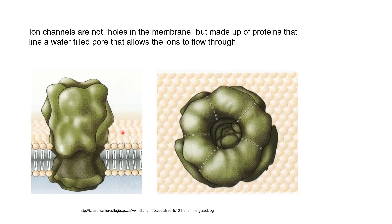Ion channels are not formed by creating holes in the bilipid layers of the membranes. Rather, ion channels are formed by protein molecules that are embedded in the membrane. Here is one such protein molecule which extends out on the outside of the neuron and spans the whole bilipid layer into the inside. If we look at this molecule from the top, we can see that there is a cavity or pore in between, typically filled with water, through which ion molecules can pass.